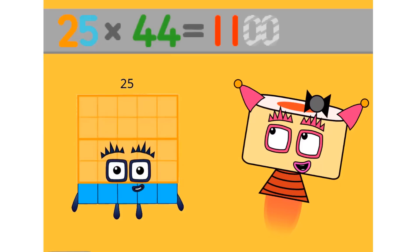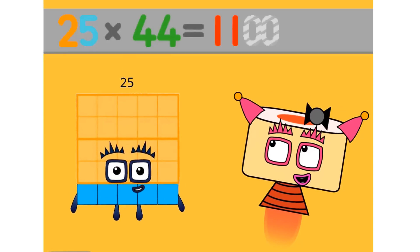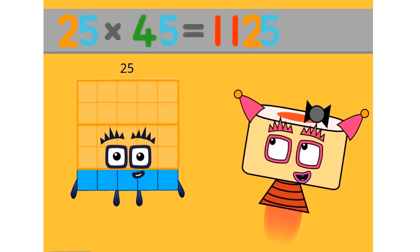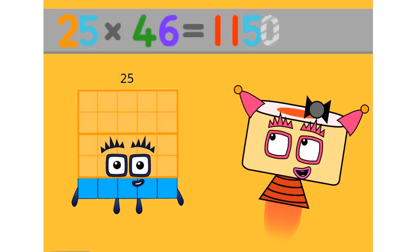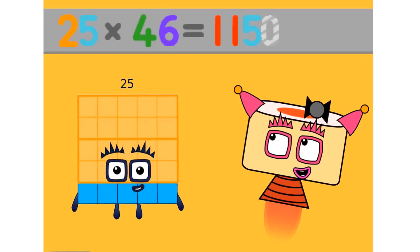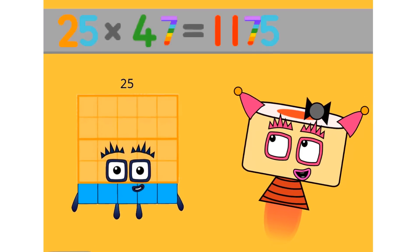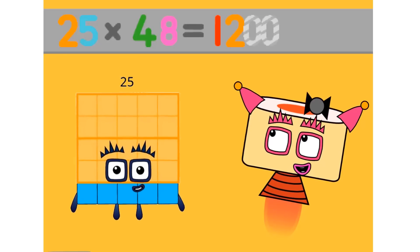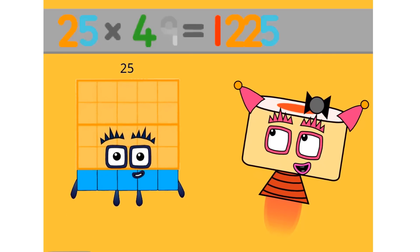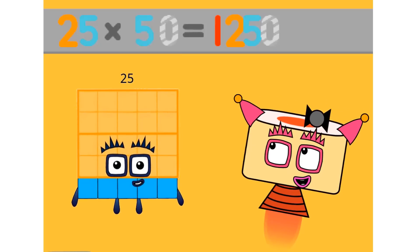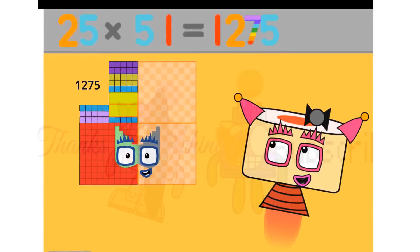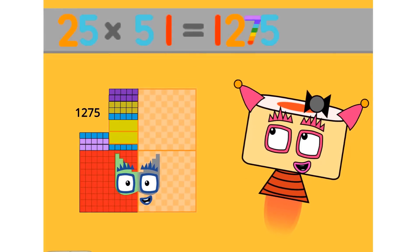25 times 44 equals 1100. 25 times 45 equals 1125. 25 times 46 equals 1150. 25 times 47 equals 1175. 25 times 48 equals 1200. 25 times 49 equals 1225. 25 times 50 equals 1250. 25 times 51 equals 1275.